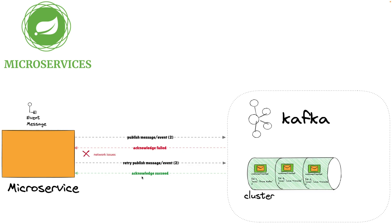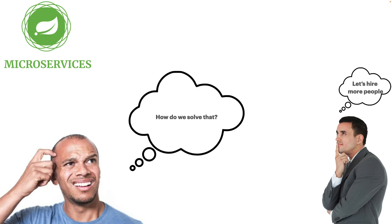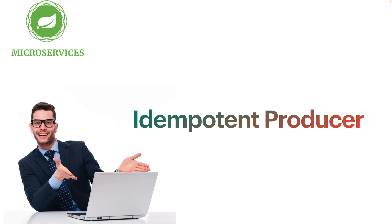Kafka will receive the event and send the acknowledgment — this time it succeeds. But if we look closer, we can see we now have duplicate messages. This is very bad because some business use cases don't allow messages to be duplicated, as it can cause bugs in your system. So the question is: how do we solve the duplicate message issue?